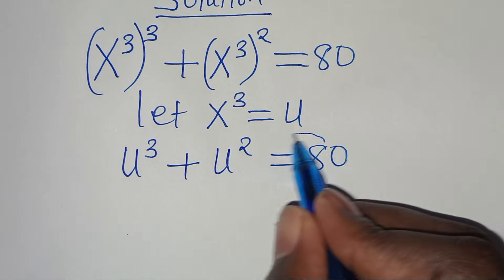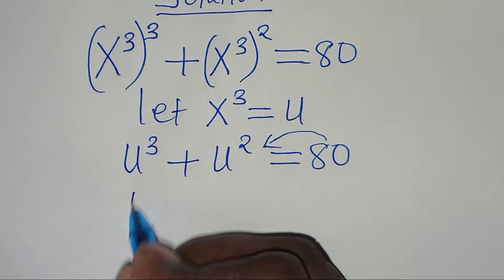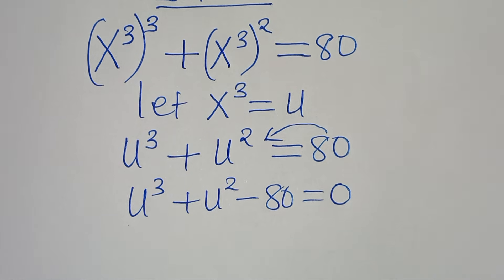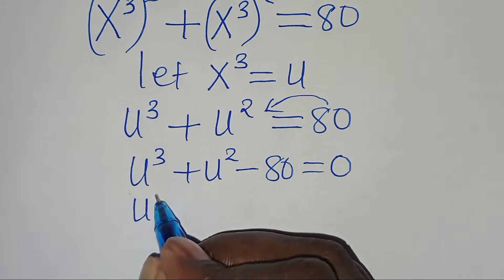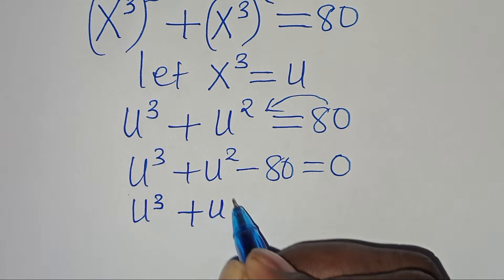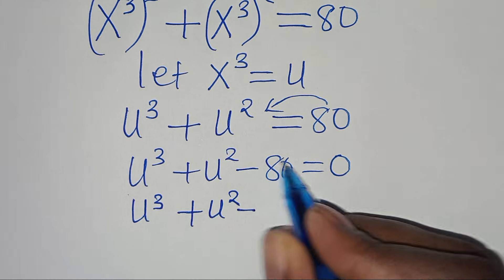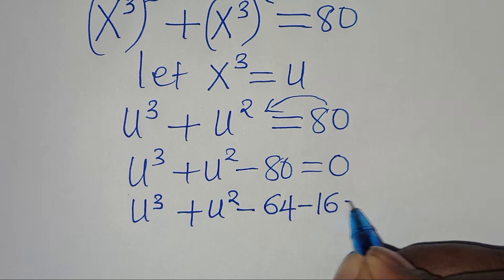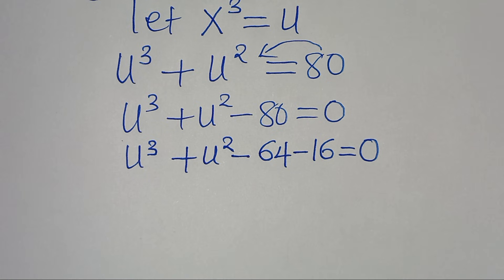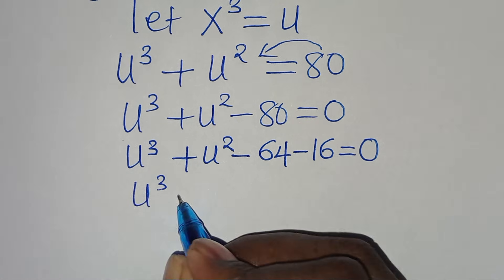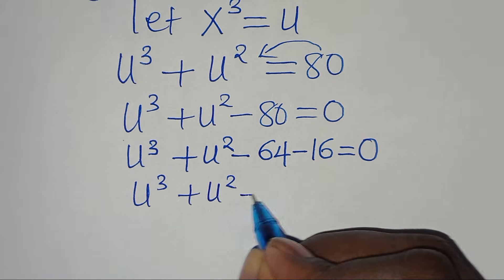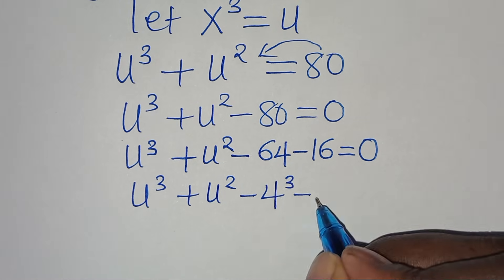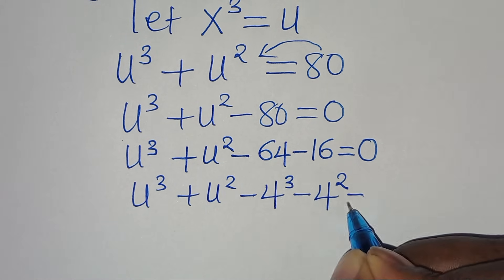Now let's take 80 on the left hand side, so that we have u to the power of 3 plus u to the power of 2 minus 80, which is minus 64 minus 16, equal to 0. So we have u to the power of 3 plus u to the power of 2, subtract 64 — which we can express as 4 to the power of 3 — then subtract 16, which is 4 to the power of 2, equal to 0.